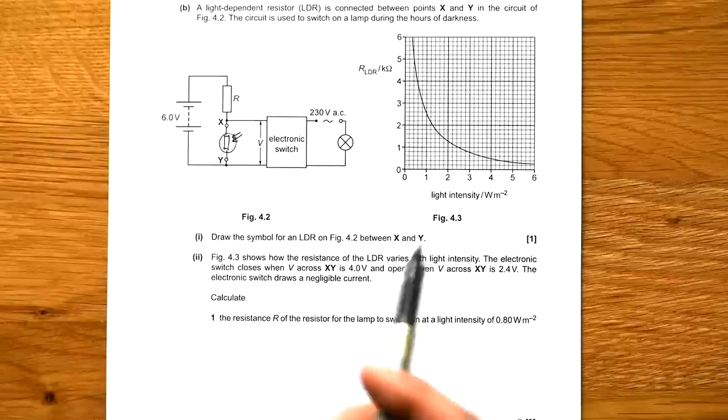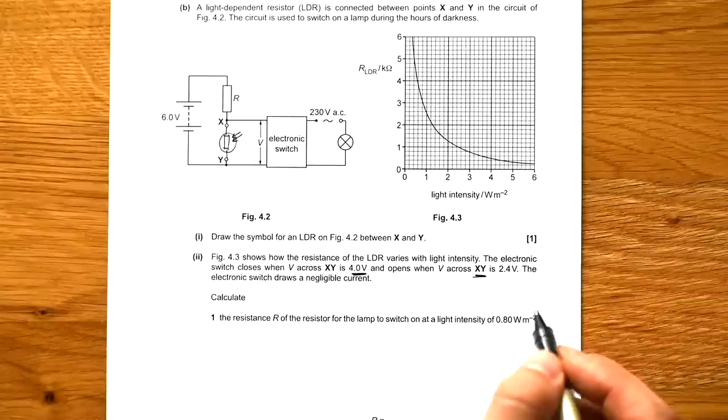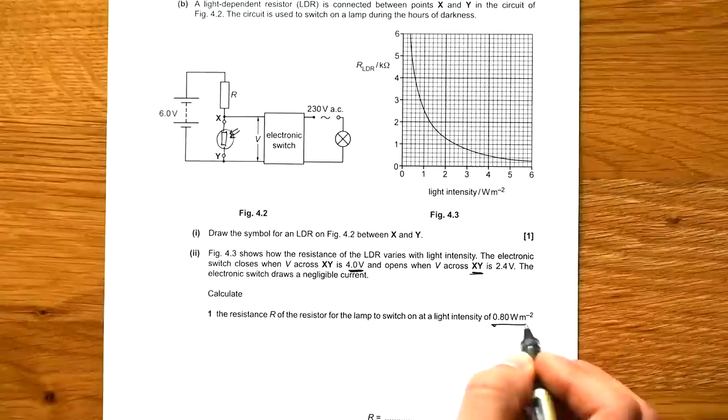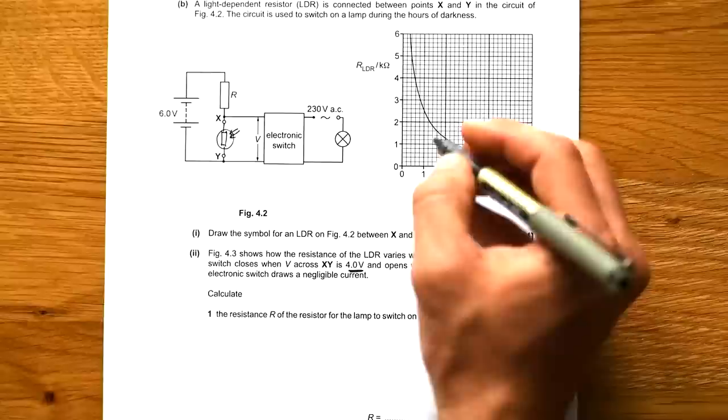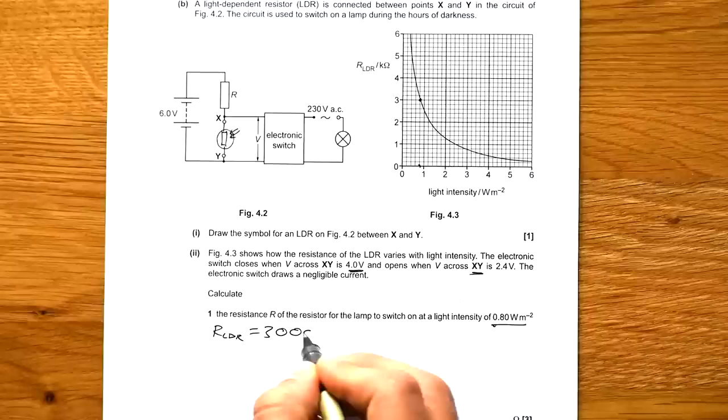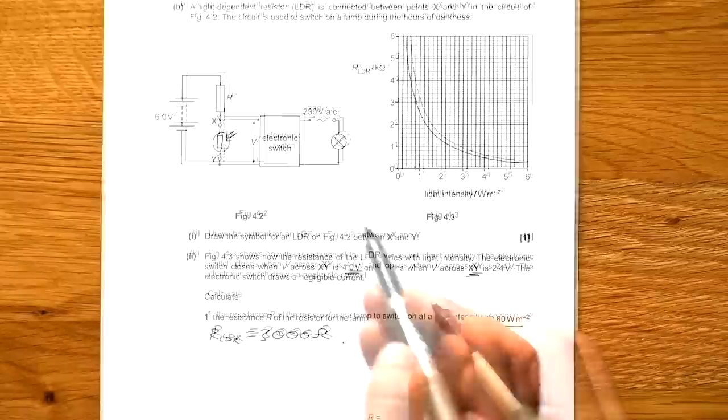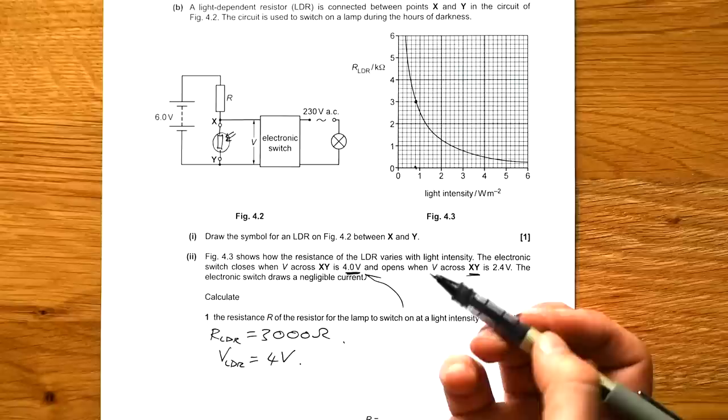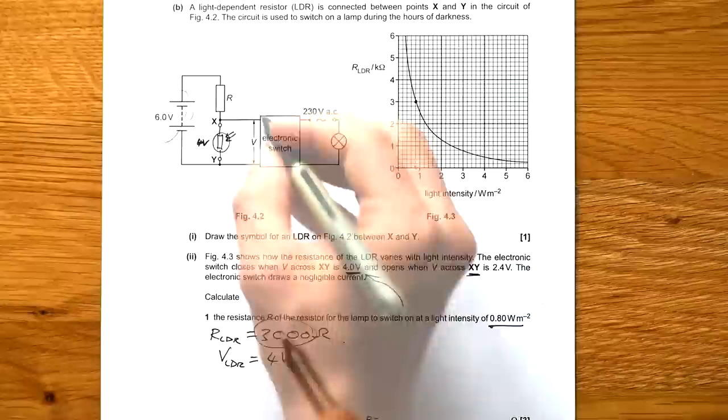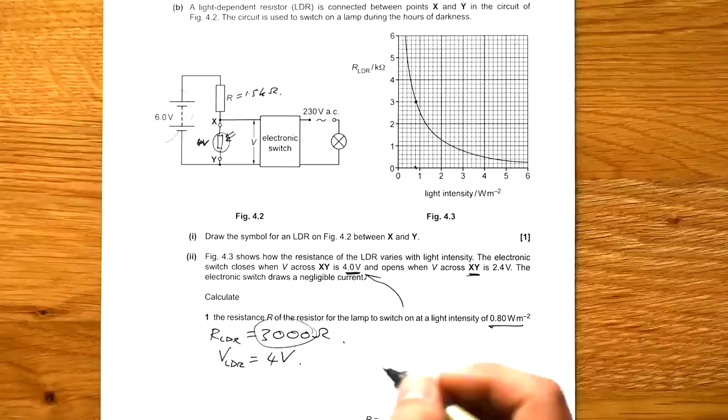Figure 4.3 shows how resistance of LDR varies with light intensity. The electron switches when V across XY is 4 volts and opens when V across XY is 2.4 volts. Electronic switch draws a negligible current. So calculate the resistance R of the resistor for the lamp to switch on at an intensity of 0.8 watts per meter squared. So at 0.8, we are looking at a resistance across the LDR of exactly 3 kilo ohms. So the resistance of the LDR is 3000 ohms. And in order to switch on, if you want the lamp to switch on, that means we're looking for this 4 volts. So fairly easy, just a ratio game. So if you have 4 volts across here, that means that it's taking two thirds of the 6 volts. That means that this is two thirds of the overall resistance. So therefore, this is going to be 1.5 kilo ohms.